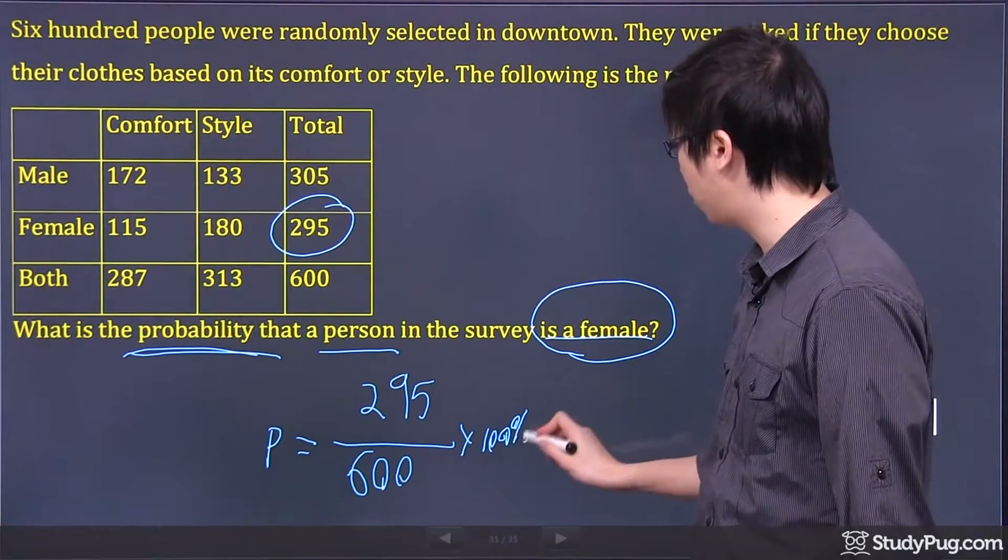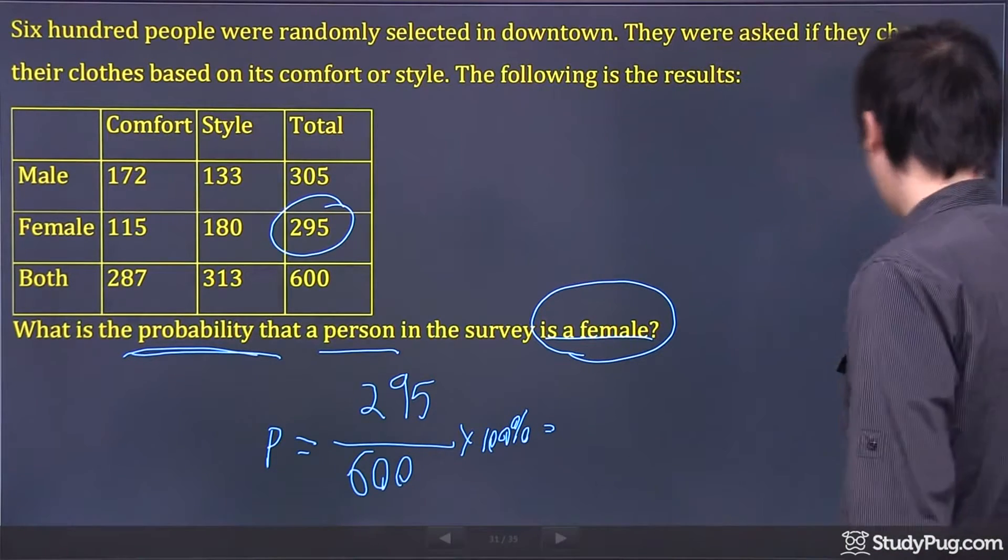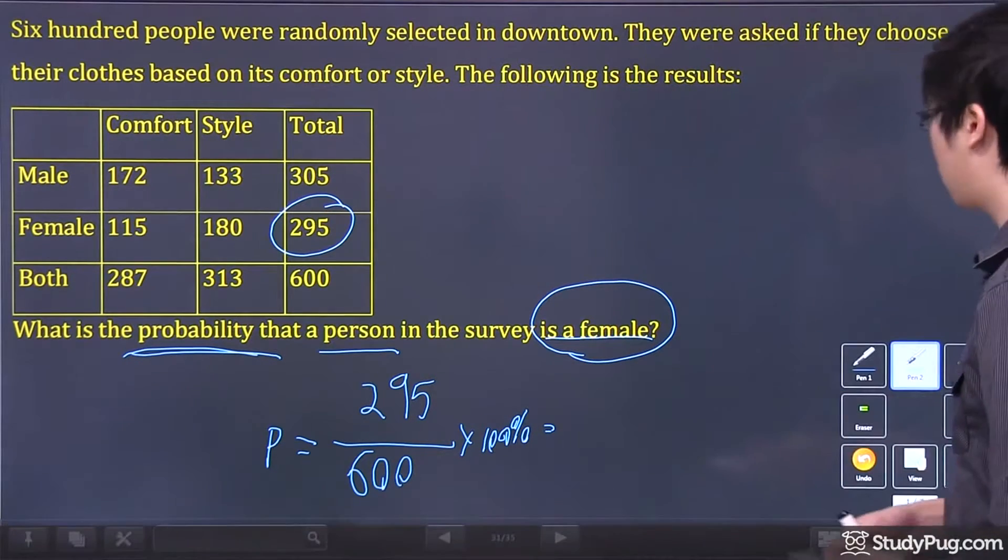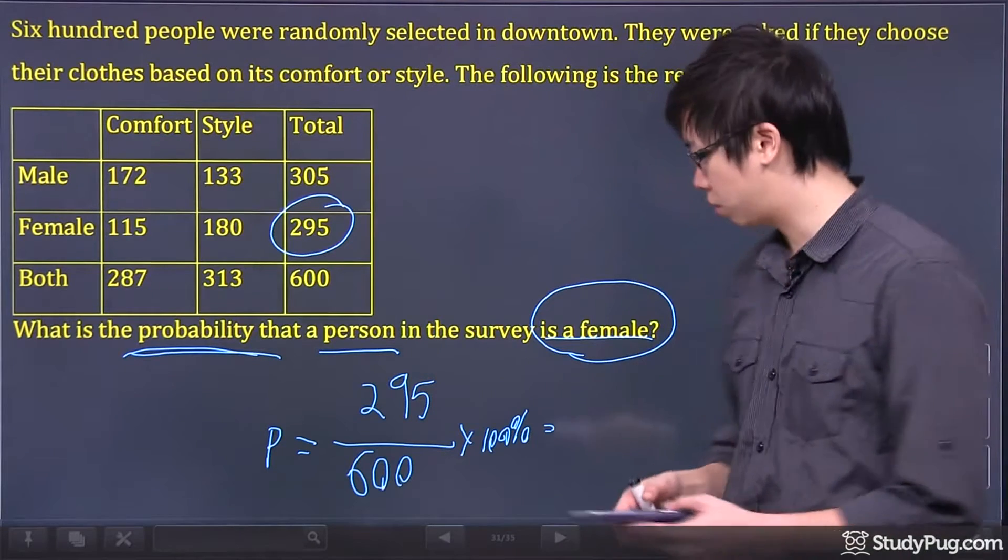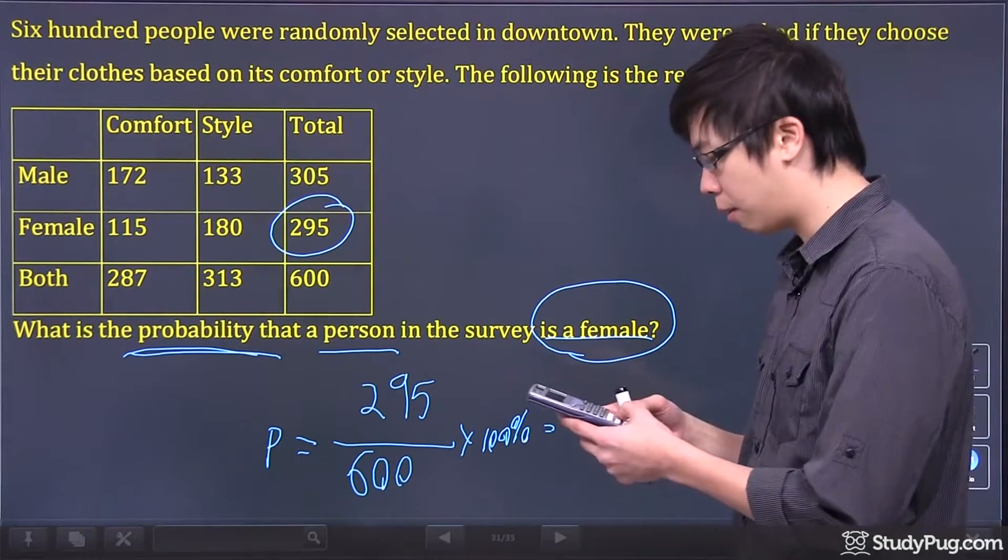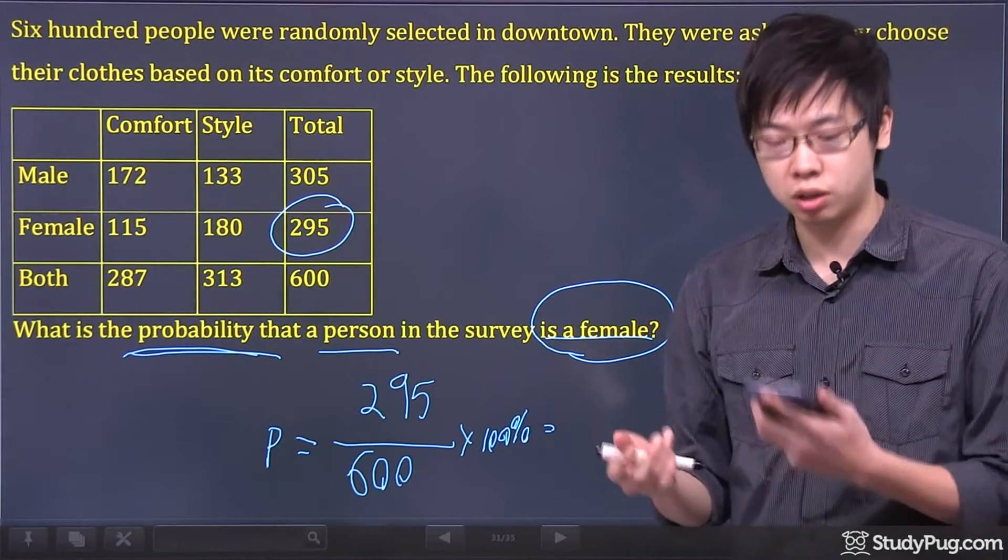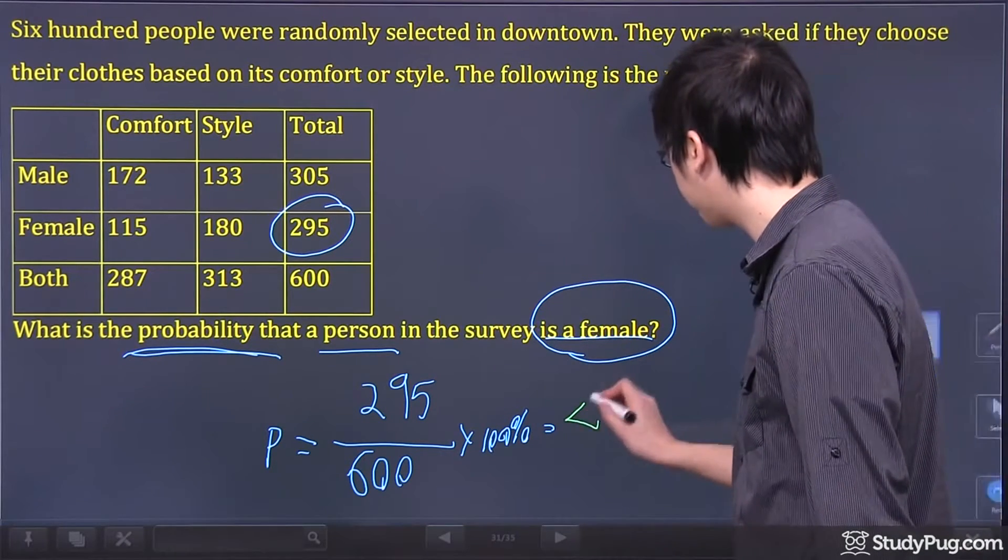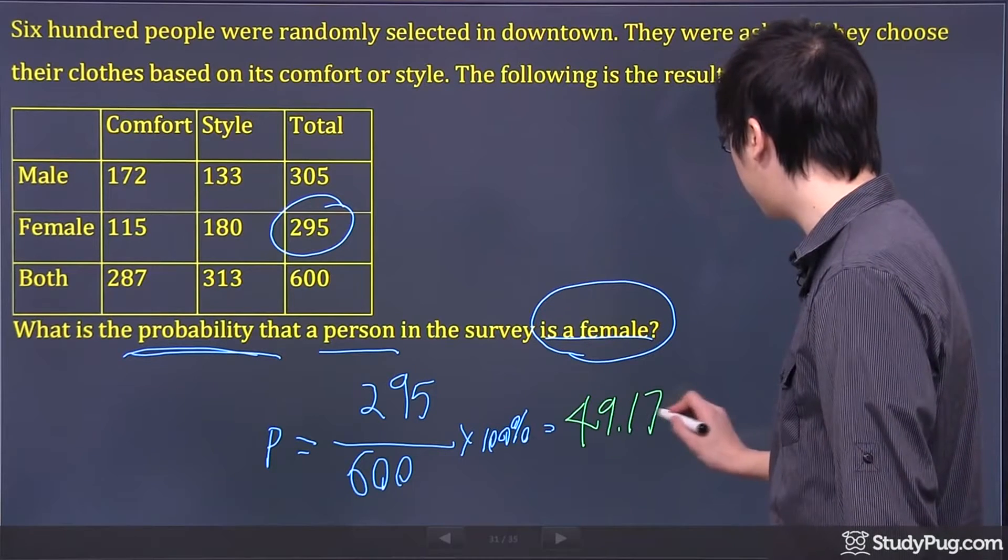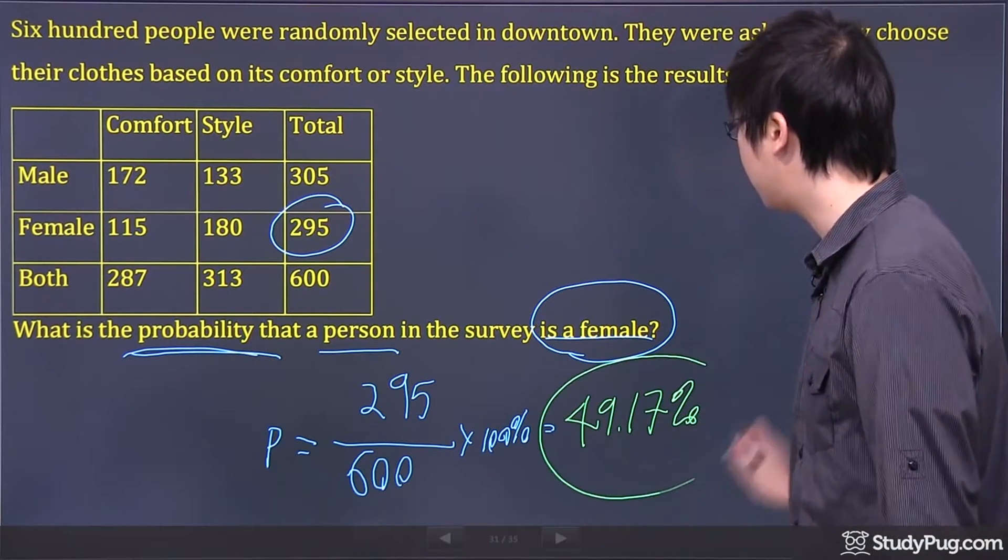Because you're dealing with probability, usually at the end we would like to refer it as a percentage. So 295 divided by 600, and if you times by 100 to get a percent, we got 49.17%, and that is the probability that a person in the survey is a female.